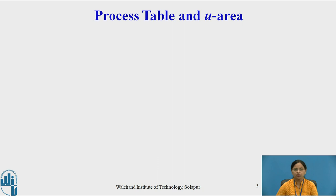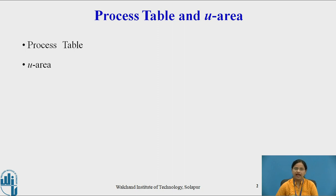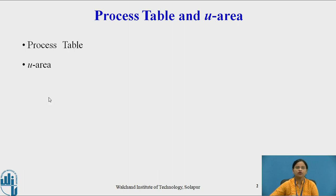Let us see two important kernel data structures: the process table and U-area. The process table is accessible only by the kernel and contains information about the state of every active process running in the system. U-area contains additional information about the process. Both the process table and U-area give the context of the process.